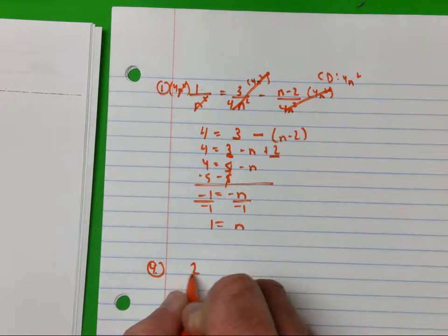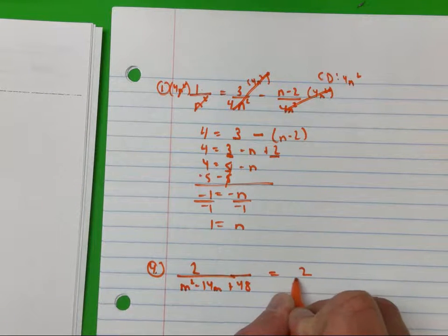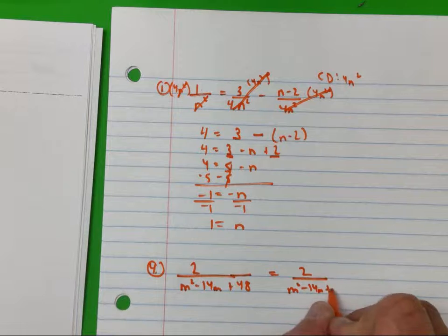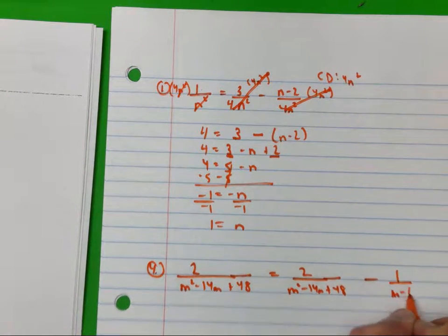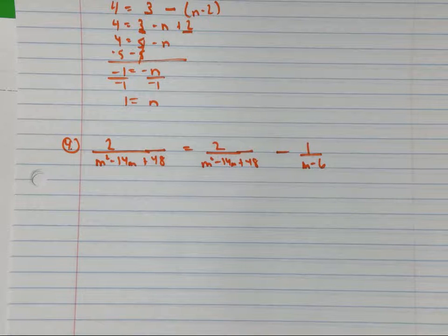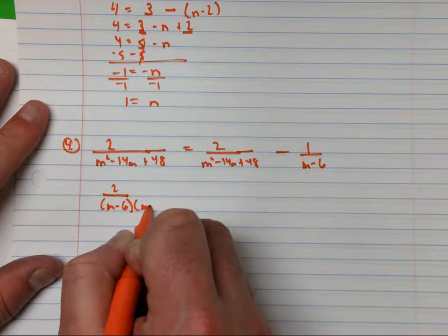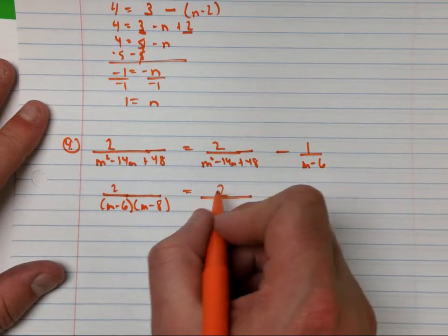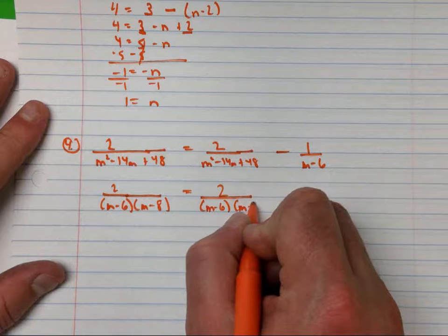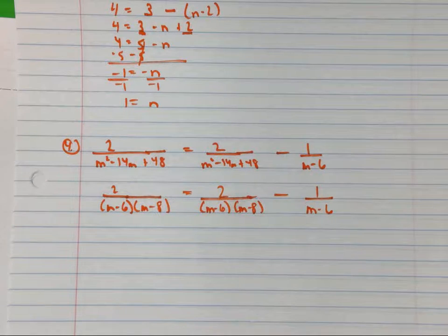I'm going to look at number four next. We have: two over n squared minus 14n plus 48 equals two over n squared minus 14n plus 48, minus one over n minus six. The first thing I'll do is factor my denominators. That factors to n minus six and n minus eight. Now look at your common denominators — you see n minus six and n minus eight appearing throughout. Think about what the common denominator will be.